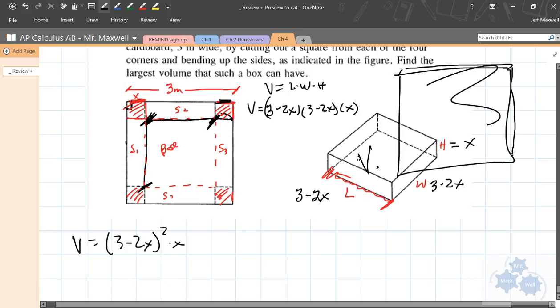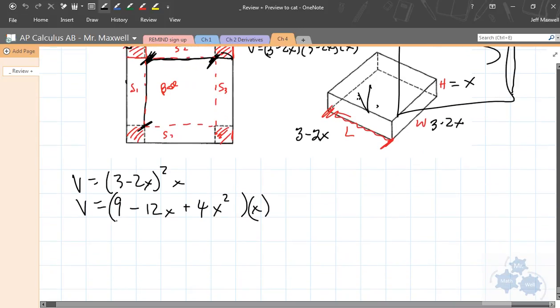So if you square this, you're going to have 9 minus 12x plus 4x squared all times x. Does that look right? Did I do that right? So volume is going to be, and I'll just write it in descending order, 4x cubed minus 12x squared plus 9x. Does that look right so far? Well, that's confirmed. That's the volume. And now we want to take the derivative. Volume is a function of x right now. So we'll take the derivative. We get 12x squared minus 24x plus 9.